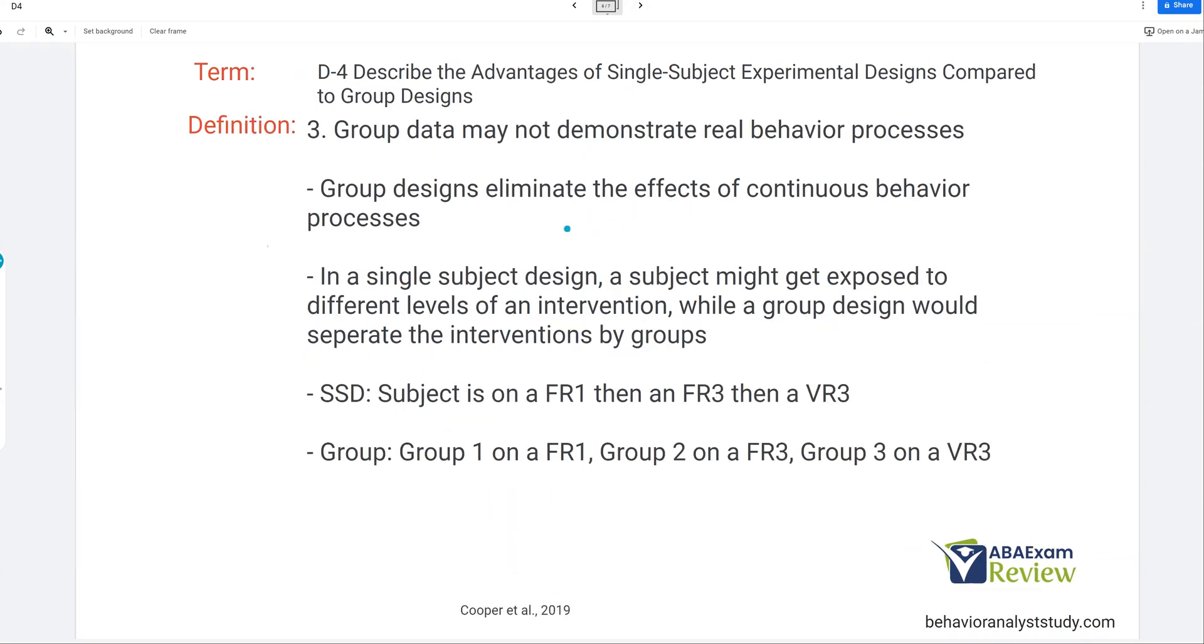Three, group data may not demonstrate real behavior processes. What do we mean by that? Well, group designs eliminate the effects of continual behavior processes. Think about a reversal design where we introduce an intervention and then withdraw that intervention. Well, the intervention has already happened. We can't undo whatever that client may have learned or unlearned. And it's just something that's part of behavior. In a group design, however, we're going to give different groups different interventions. Meaning, if we had three conditions in a single-subject design, the subject would be on the FR1, and then they'd be on the FR3, and then they'd be on the VR3. In a group design, we'd have three groups: Group 1 on FR1, Group 2 on FR3, Group 3 on VR3. So we're not really getting an indication of how each condition is affecting the individual.